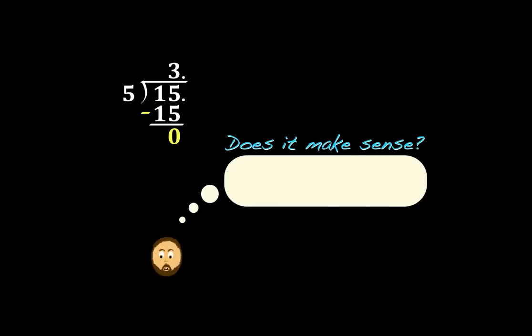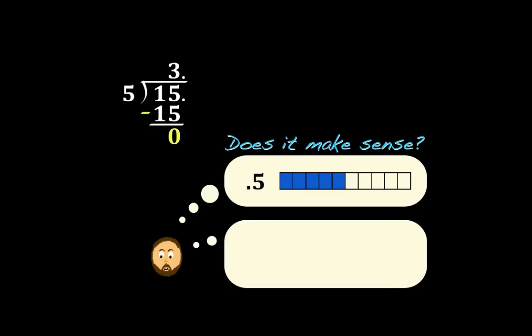Now, what we want to do at this point is we want to ask ourselves if this answer, if this quotient makes sense. Well, let's think about this for a second here. Here we have our original divisor. We have ten pieces, five out of ten, so that's five tenths. And we're asking how many times does that fit into one and a half? Well, hopefully you can just kind of in your mind picture this. It goes three times. So our answer of three makes perfect sense here.